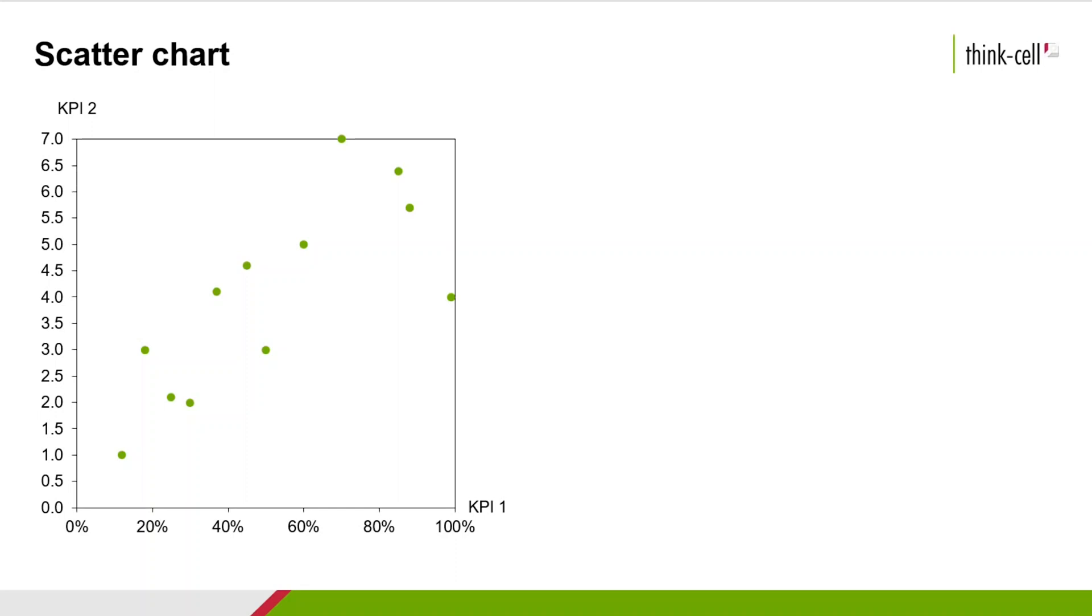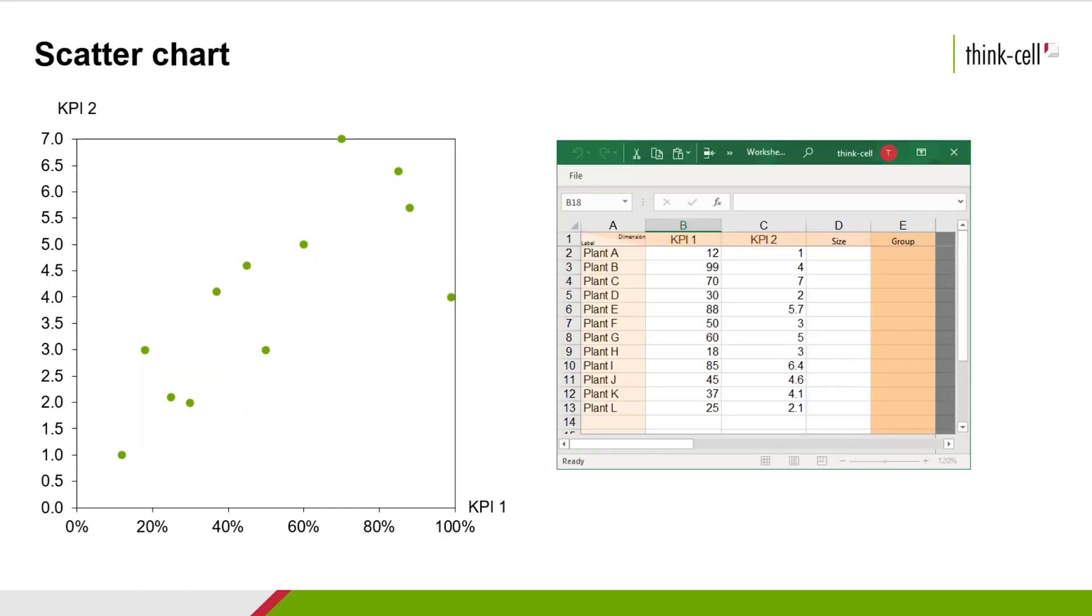Scatter charts, also known as scatter plots, are mainly used to show a relationship between pairs of data variables and to help identify patterns in the data as a whole. A scatter chart could for instance display the link between two key performance indicators, or KPIs, for a company.